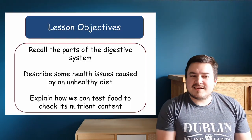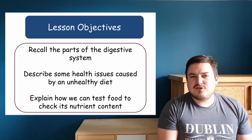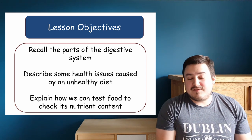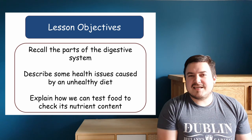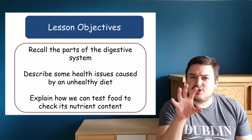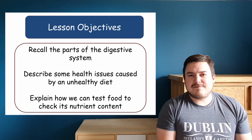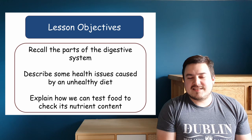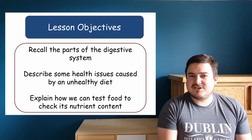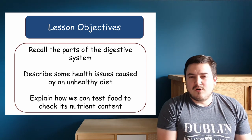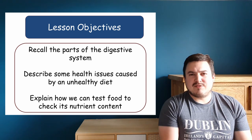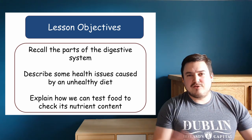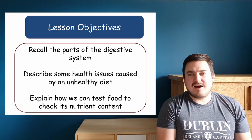Our objectives are: to record the different parts of the digestive system, describe some health issues that you can get from an unhealthy diet, and explain how we can test food to check its nutrient content. We're looking at the different food tests at the end of this lesson. We're also going to look at what happens to our body when we have too much or not enough food in our diet.